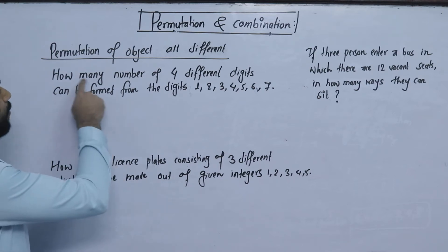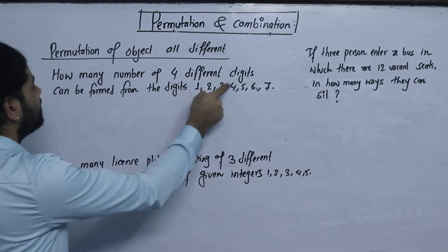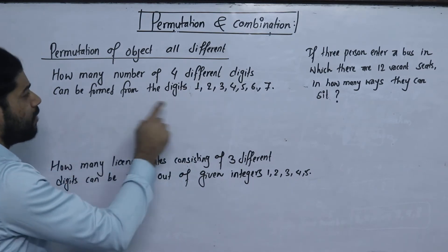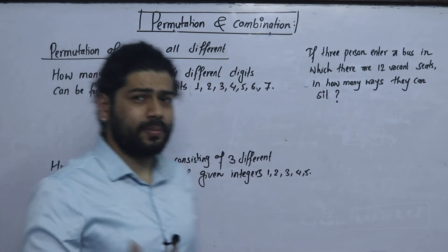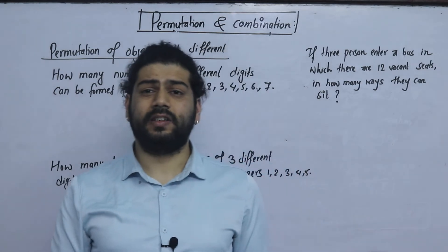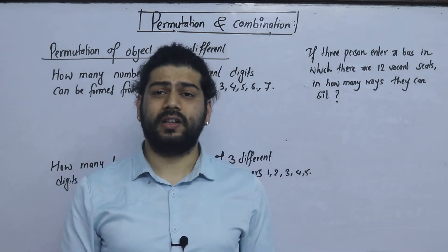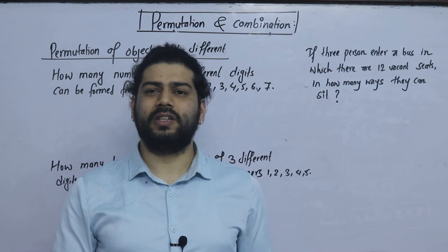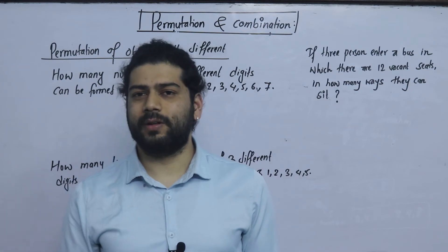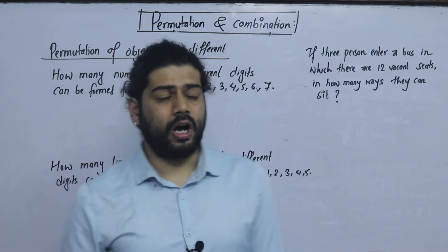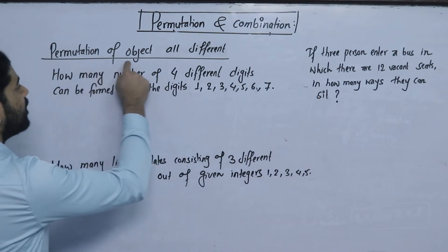How many four-different-digit numbers can be formed from the digits 1, 2, 3, 4, 5, 6, 7? In this class, since we can apply the permutation of objects from the previous introduction, the permutation here is similar to the permutation where all objects are different.